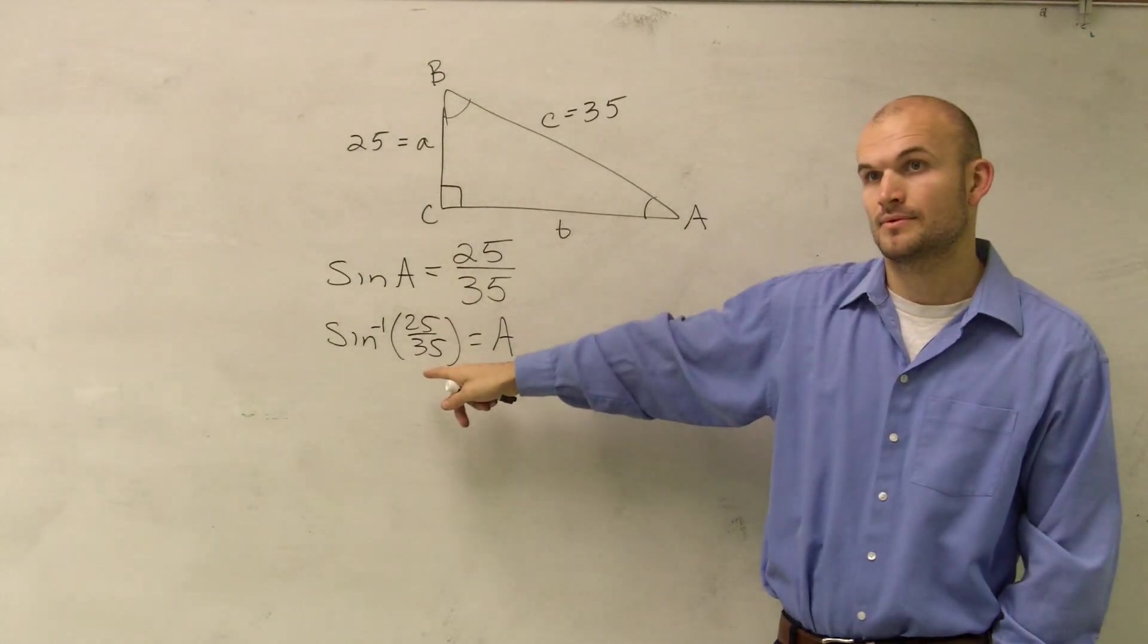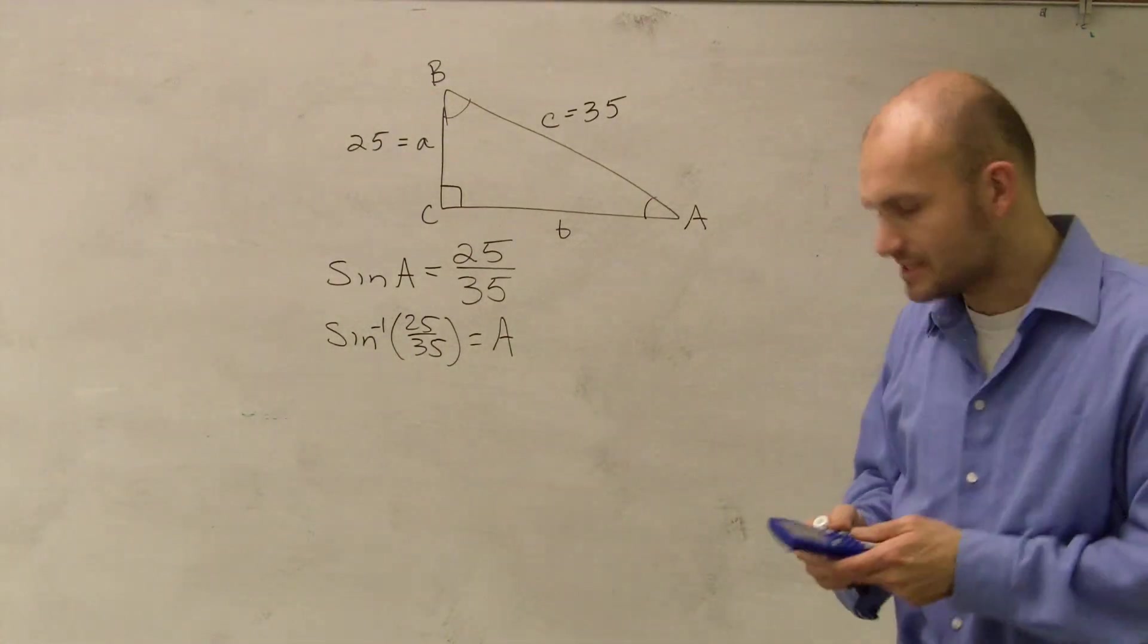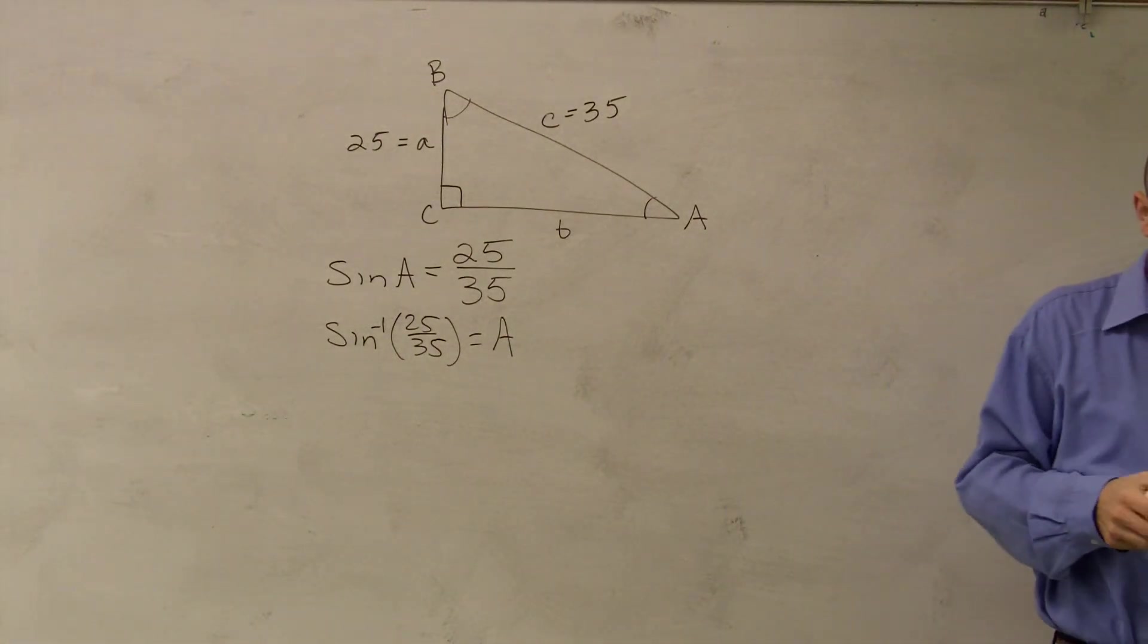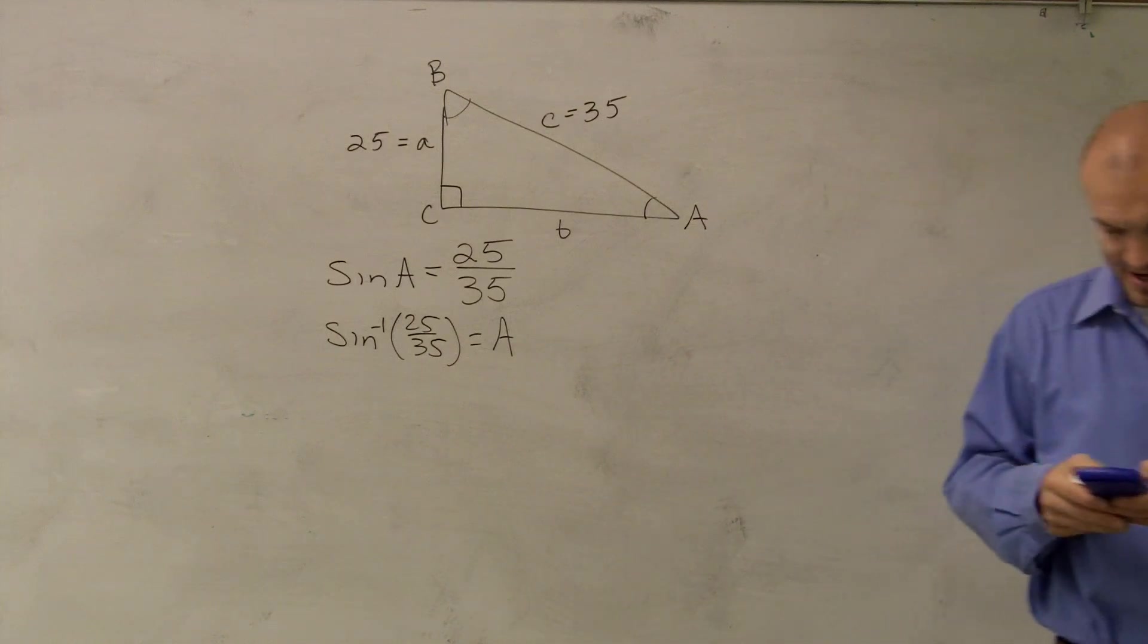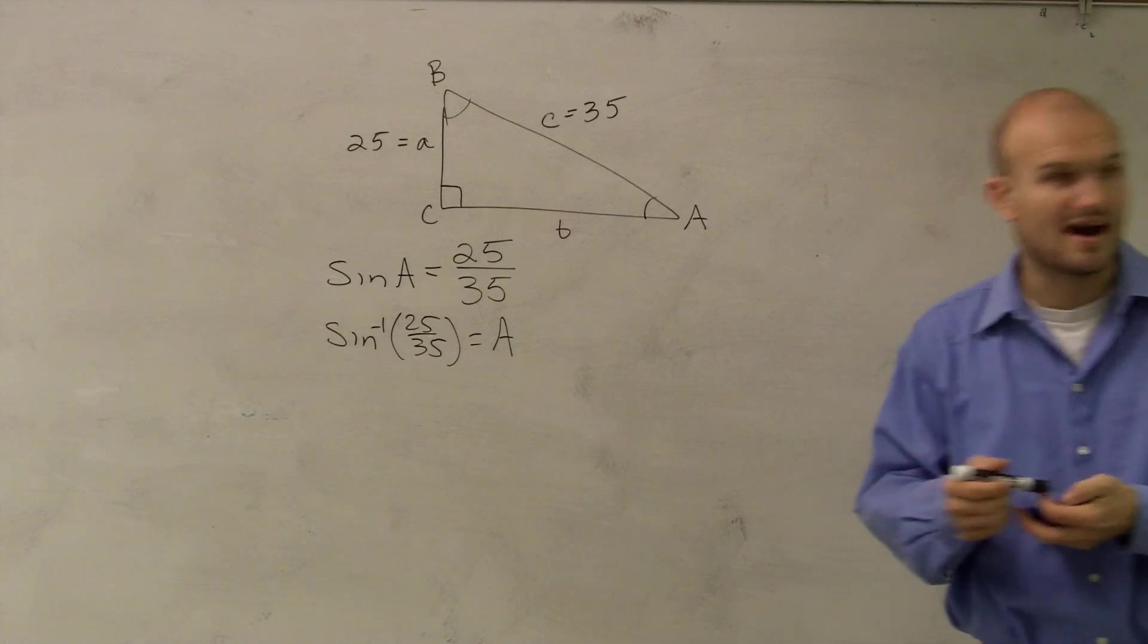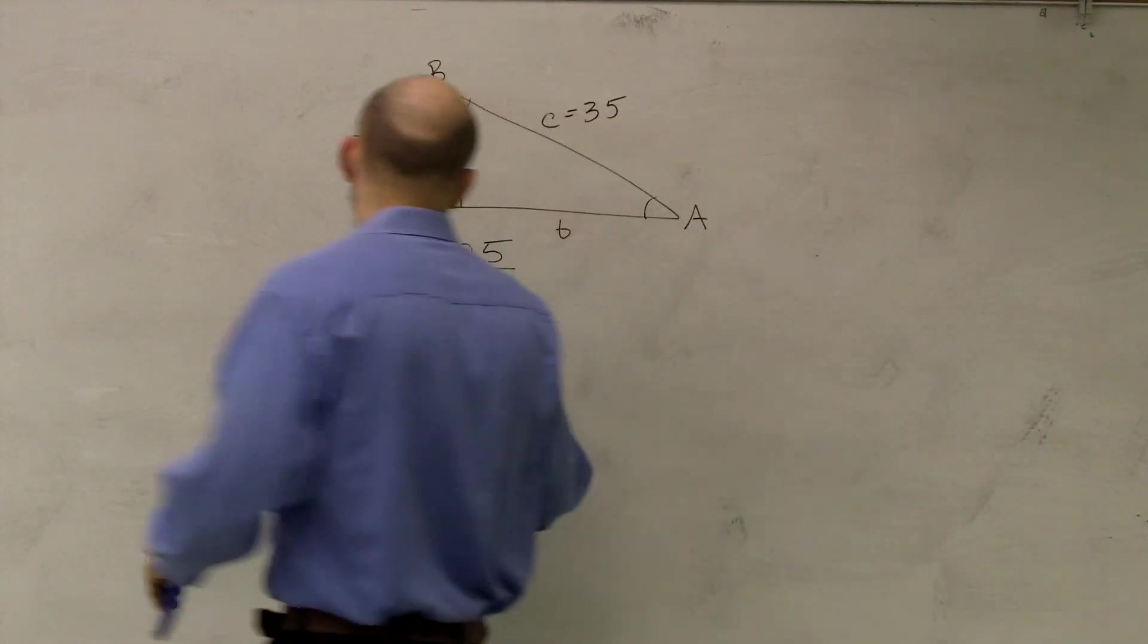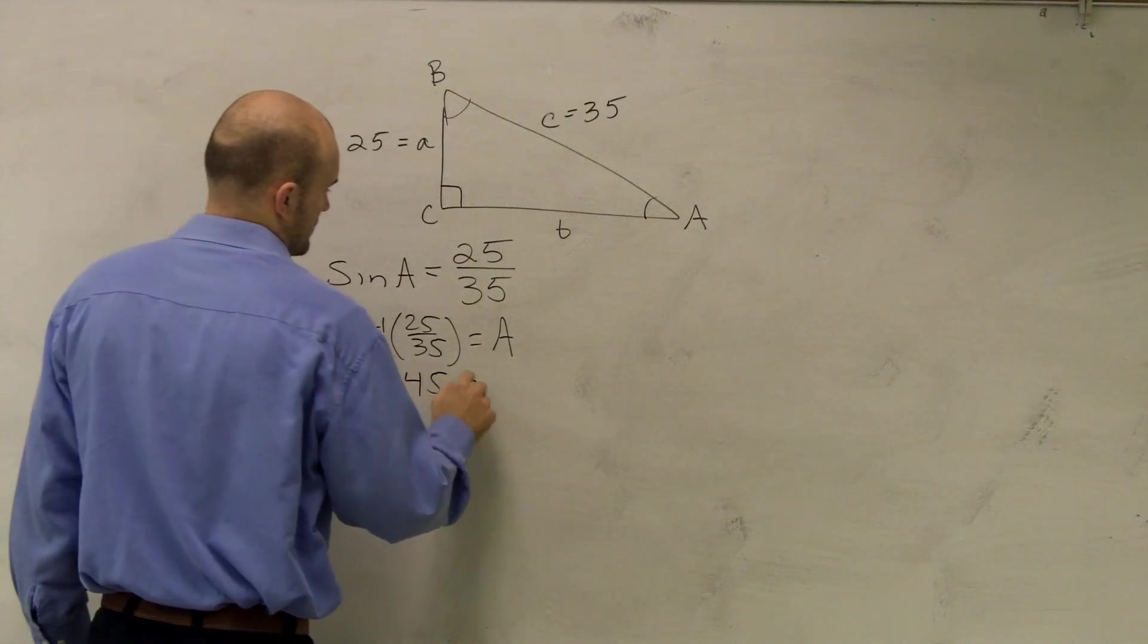And then we're going to have to use sine again? Well, I don't know, it depends. Let's just figure out what A is. So if I do inverse sine, so I take my lovely nifty calculator, inverse sine of 25 divided by 35, I'll get 45.58.